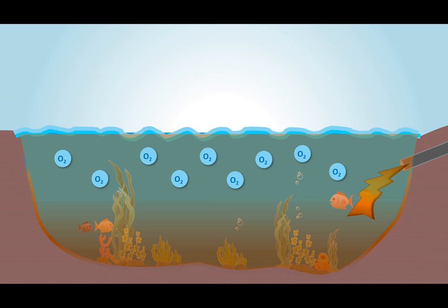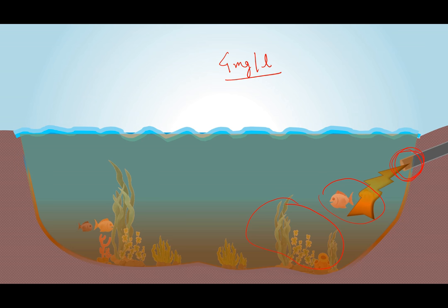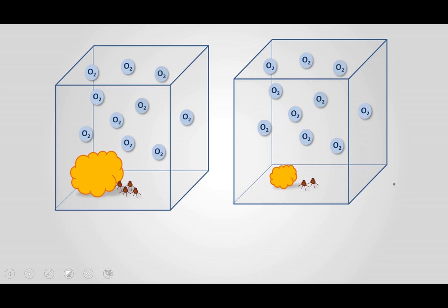The microbes start consuming the organic matter and in the process start consuming the dissolved oxygen present in the water. If the dissolved oxygen concentration falls below 4 mg/L, it will be very harmful for aquatic life — fish will start dying, foul smells will come, and the lake will become septic. To avoid this condition, it is necessary to first quantify the amount of organic matter being released so that we can treat it.